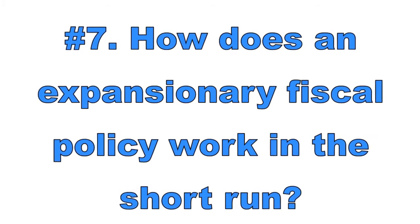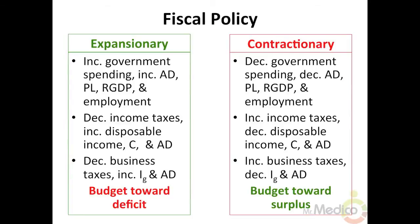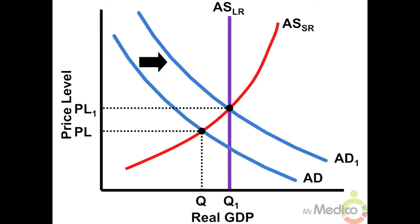Number seven: how does an expansionary fiscal policy work in the short run? According to Keynesian theory, expansionary fiscal policy is appropriate during a recession. The government can increase spending and/or decrease income taxes to shift aggregate demand to the right, increasing real GDP, raising the price level, and decreasing unemployment. Discretionary fiscal policy involves new legislation, while automatic stabilizers like welfare programs activate without new laws. All expansionary actions move the federal budget toward a deficit.